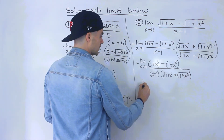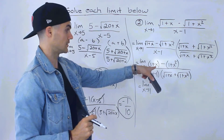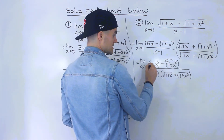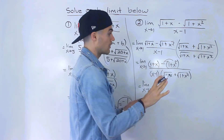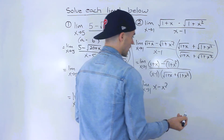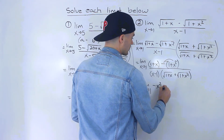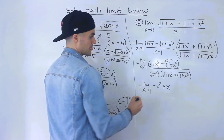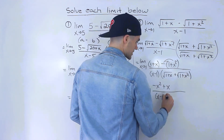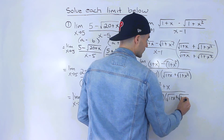Now we simplify the numerator. Distributing the negative inside the bracket: the positive 1 and the negative 1 cancel out, and we end up with x minus x squared — or rewritten as negative x squared plus x. This is all over (x minus 1), and then that denominator expression stays the same: (root of 1 plus x plus root of 1 plus x squared).